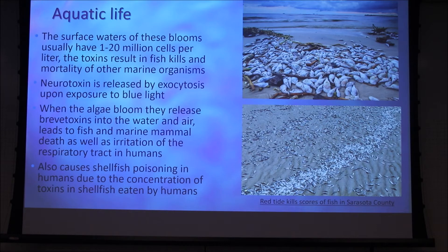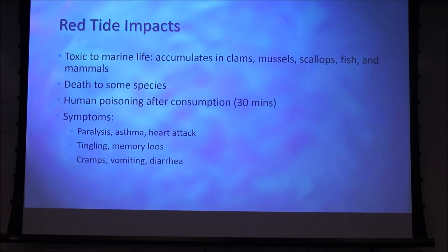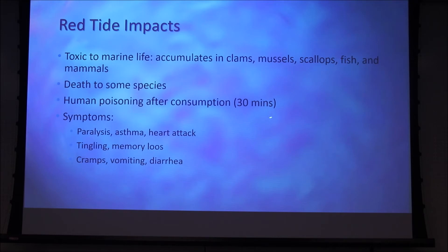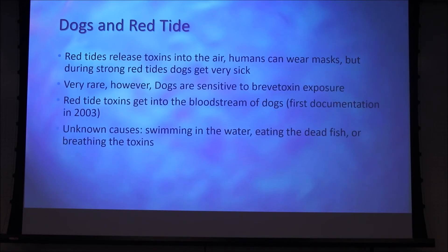These red tide events in Sarasota County led to thousands of marine life deaths, including whales. Red tide impacts are toxic to marine life — it accumulates in clams, mussels, scallops, fish, and mammals, causing death in some species. For humans, poisoning after consumption causes symptoms within 30 minutes: cramps, vomiting, and diarrhea similar to food poisoning. Then about 15 minutes after this, you feel tingling in your limbs, memory loss, paralysis, asthma, and potentially heart attack if untreated.